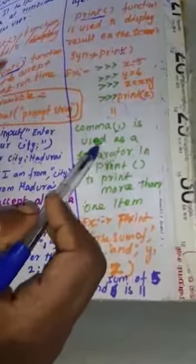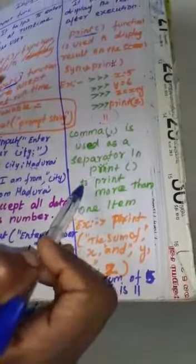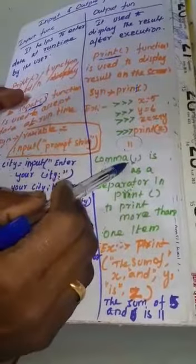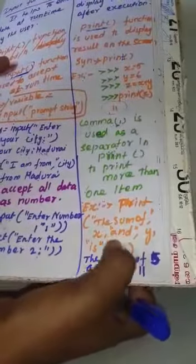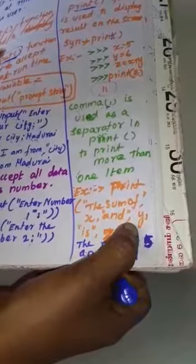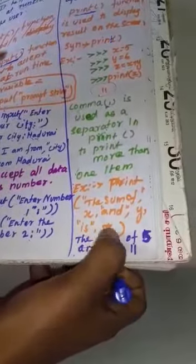Next, comma is used as a separator in print function. To print more than one item. If you want to print more than one item in a print function, use the comma. Here example: print the sum of x, comma and comma y, comma is comma z. What is the output? The sum of x, what is the value? 5. And y, what is the value? 6 is 11. So, this is the output function.